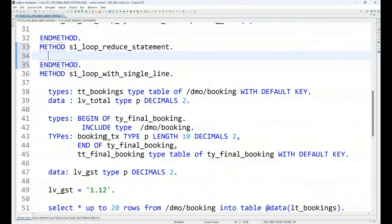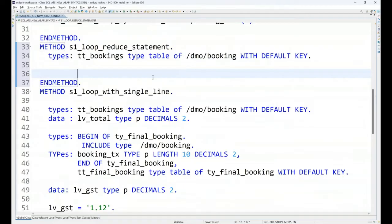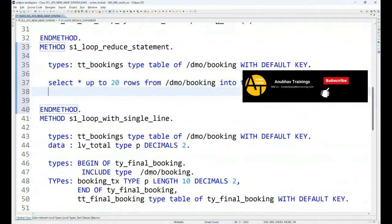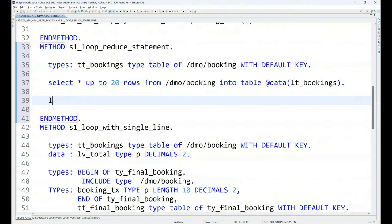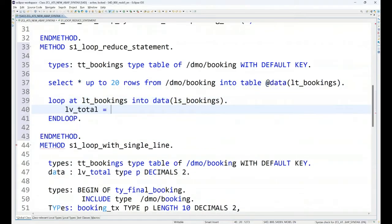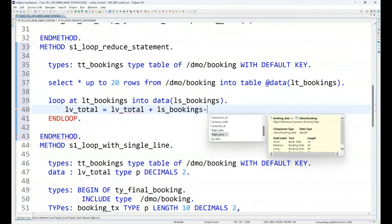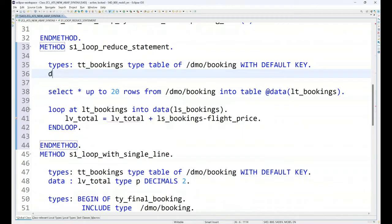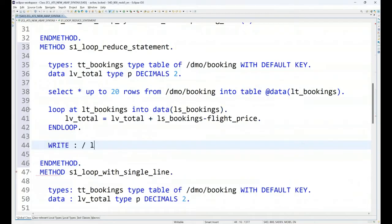So now what I will do, I will select the data, create the data type, select the data from the database table around 20 rows, and I wanted to show the total booking fees, total price which we paid. So we will just loop at lt_bookings into data ls_bookings and we will say lv_total, total booking which has come till today is lv_total addition with my booking fees or the booking price. So total booking price so far what we paid, this is our data, and I will of course declare also a data variable up to decimal point. So we will finally get our total. This is the traditional way of ABAP to calculate the total.